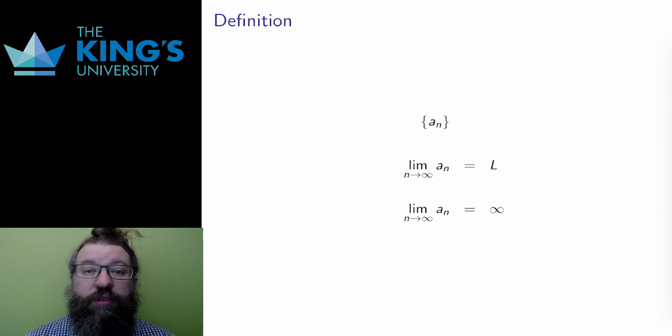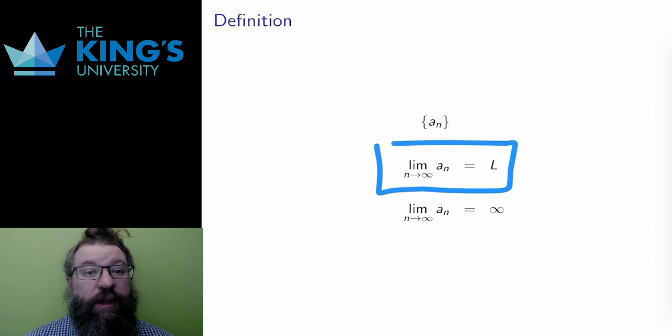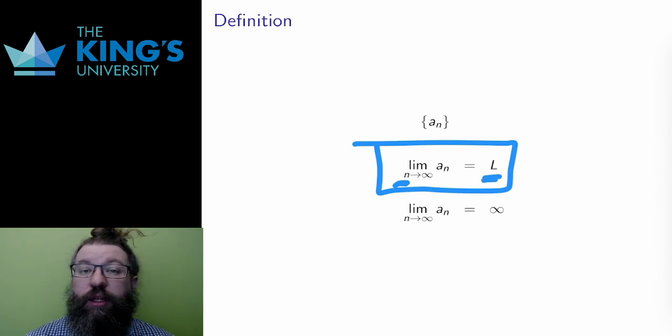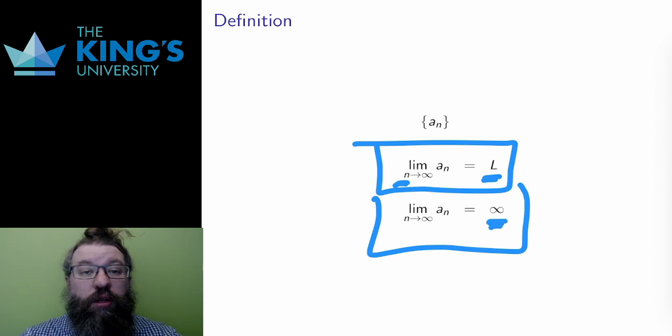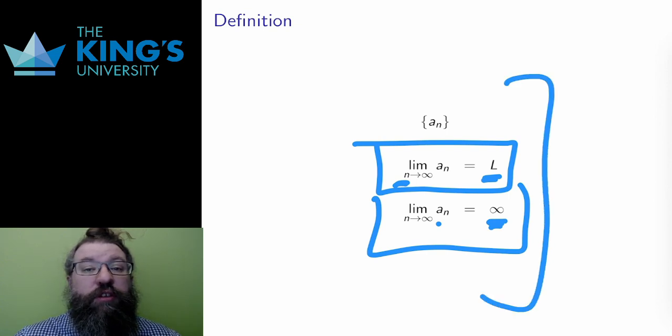The statement that the limit of a sequence as n goes to infinity is l means that, as n gets larger and larger without bound, the terms get closer and closer to l. Similarly, the statement that the limit is infinity means that the terms also get larger and larger without bound. This is the same definition as for real number functions before. But now the functions have the domain of whole numbers, not all real numbers.